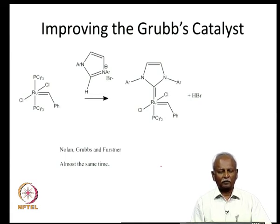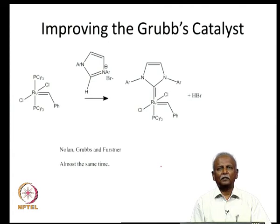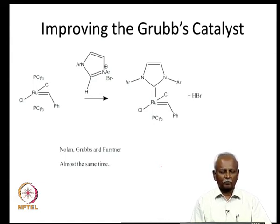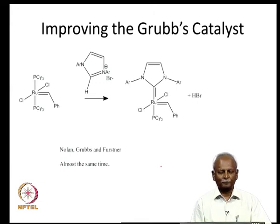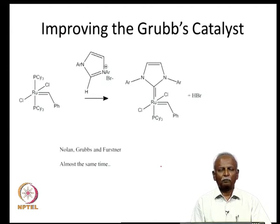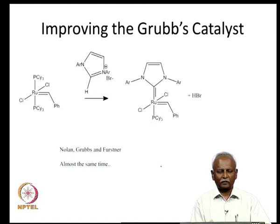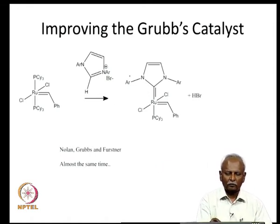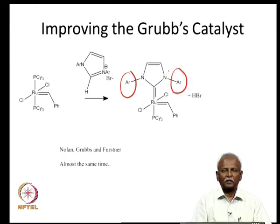After Grubbs declared the synthesis of this catalyst, several people wanted to make better metathesis catalysts — something more reactive than the first-generation catalyst, which could not be used with several substrates. Nolan, Grubbs, and Fürstner discovered that if you attach an N-heterocyclic carbene to the ruthenium, replacing one tricyclohexylphosphine with a carbene, then the catalyst turns out to be much more reactive and useful. Presumably, the electron density on the ruthenium is increased, and the large aryl groups protect the ruthenium center from unnecessary reactions and decomposition.